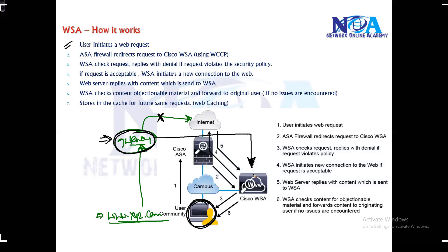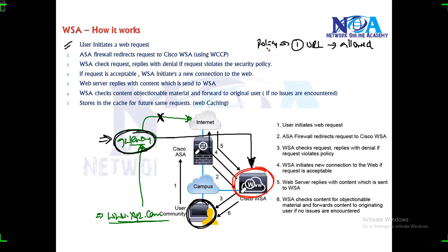So now what happens is the WSA receives the web request. Two things happen here. The first thing the WSA is going to check is whether this particular URL is allowed or not, because it's going to check against the policies. As per the policies, accessing a specific URL or whatever application is running at that URL — is it allowed or not?